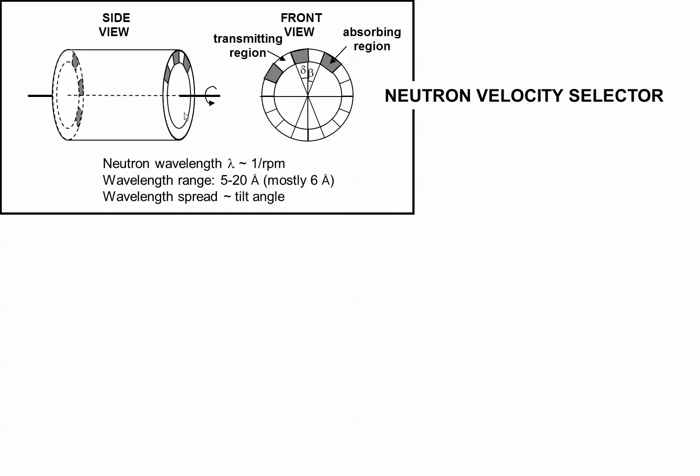For example, five angstrom neutrons travel at something like 5,800 meters per second. Because of the spinning helical slot, neutrons with the right speed will make it out of the selector. Those that are too fast or too slow get absorbed. This is how a neutron velocity selector works.